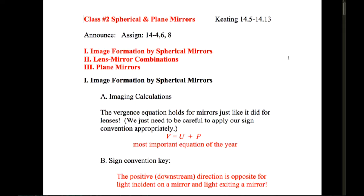We talked last Tuesday about image formation by spherical mirrors. The vergence equation works for mirrors just like it did for lenses. The sign convention is incredibly important — it was important before, but it's a little tricky now because the light reflects off of a mirror. So V equals U plus P — still the most important equation of the year — and you'll see it a lot again this semester.